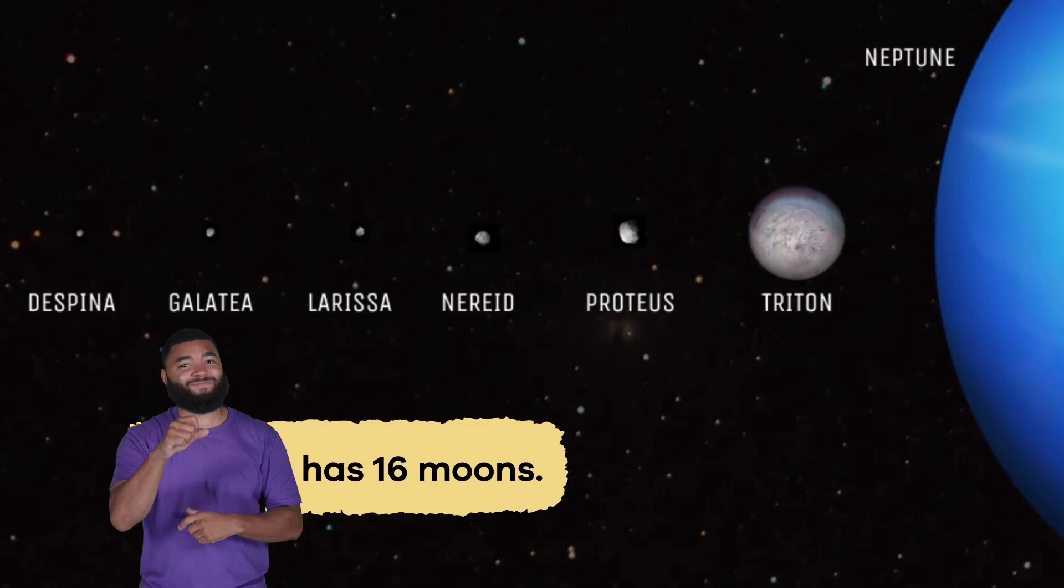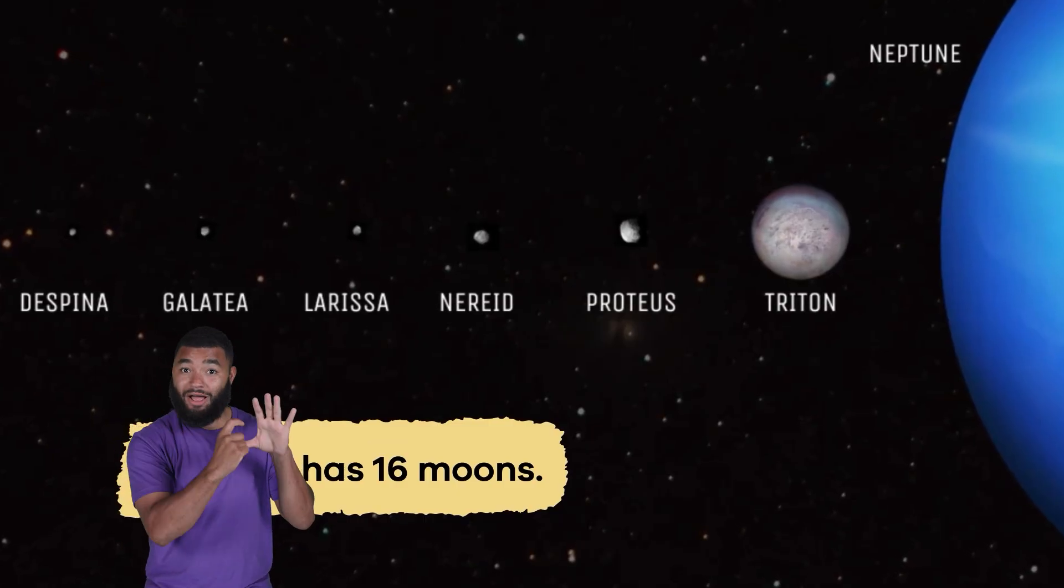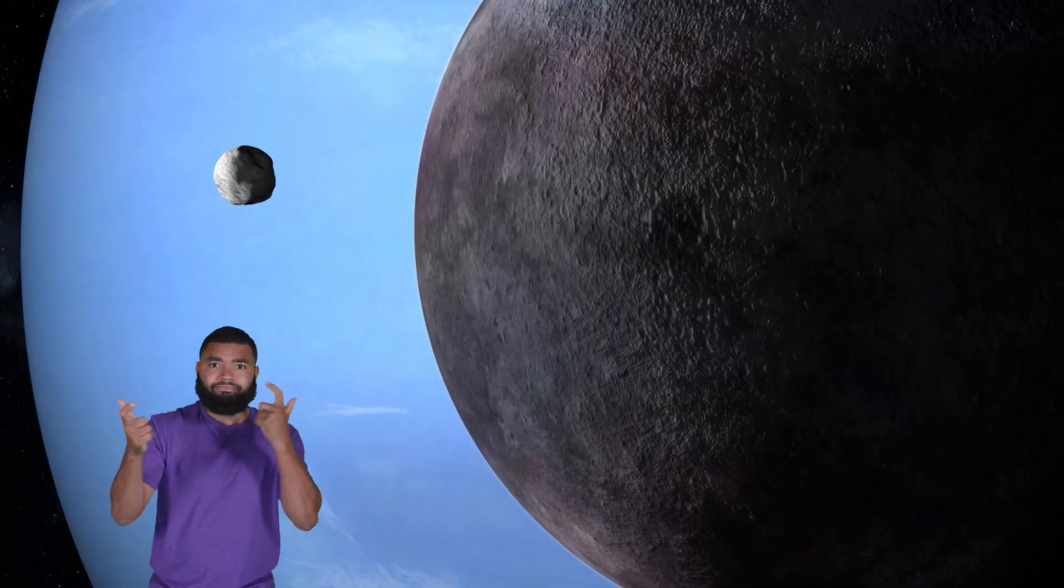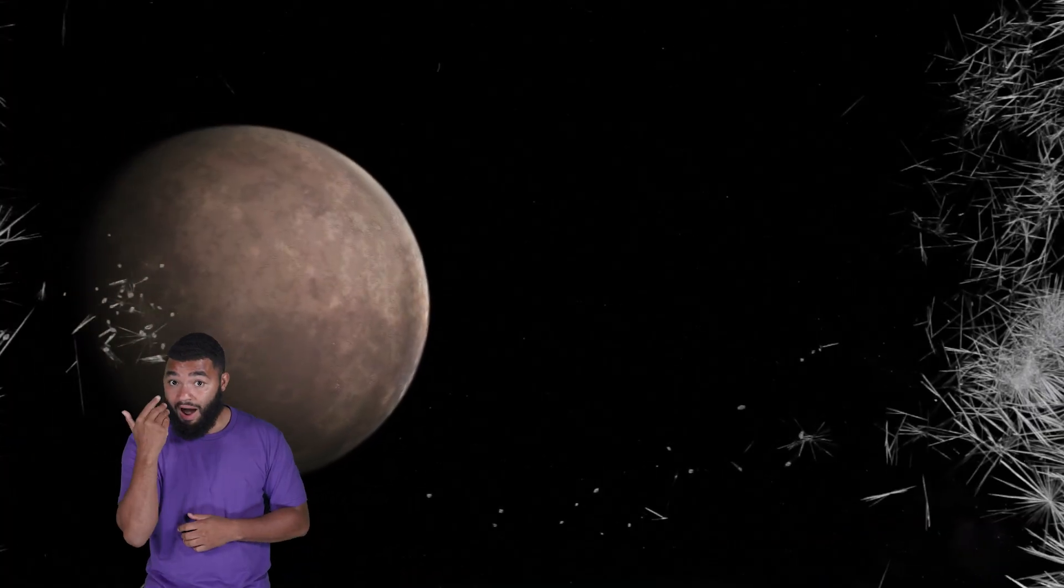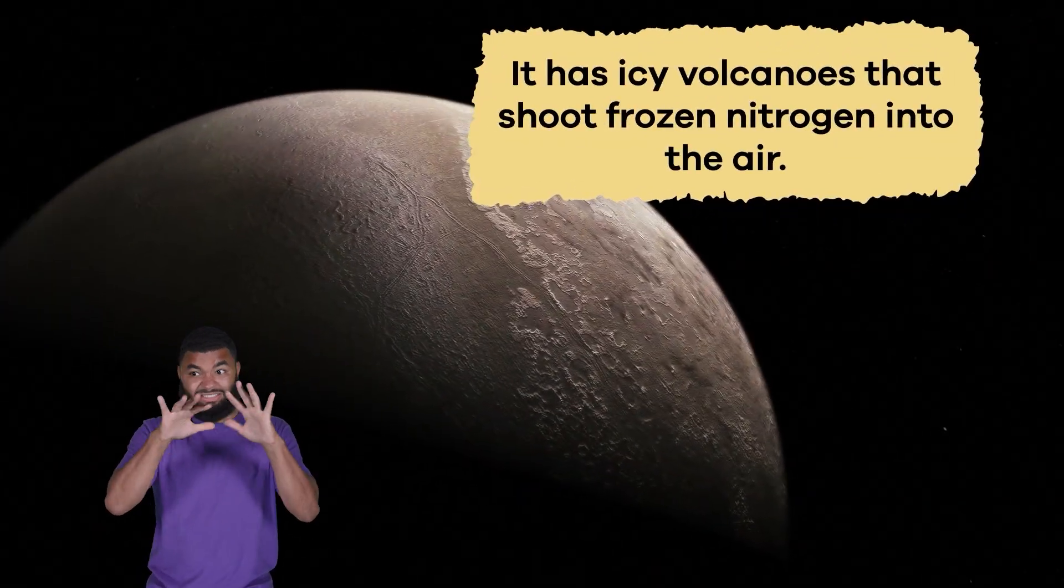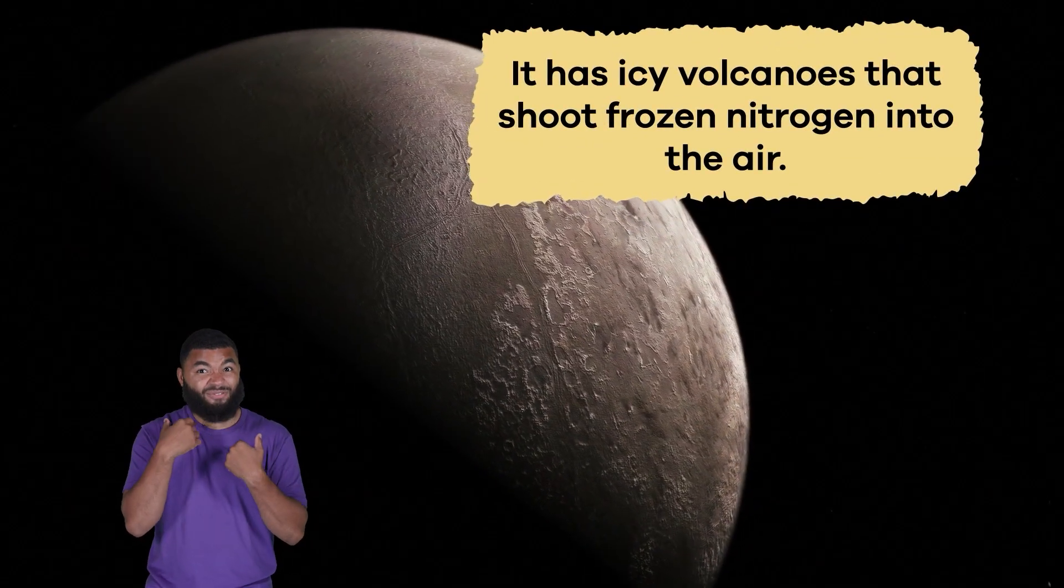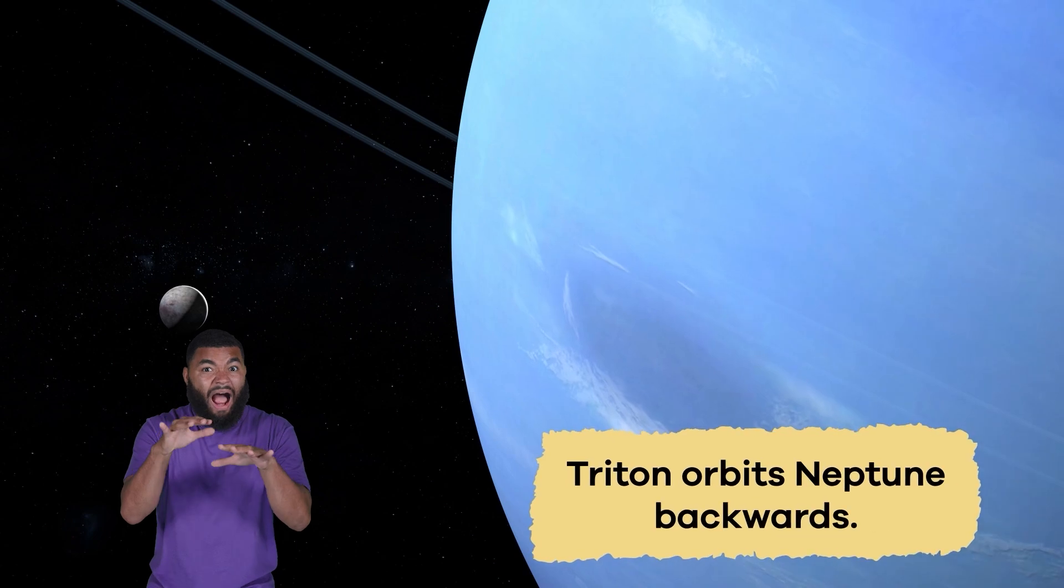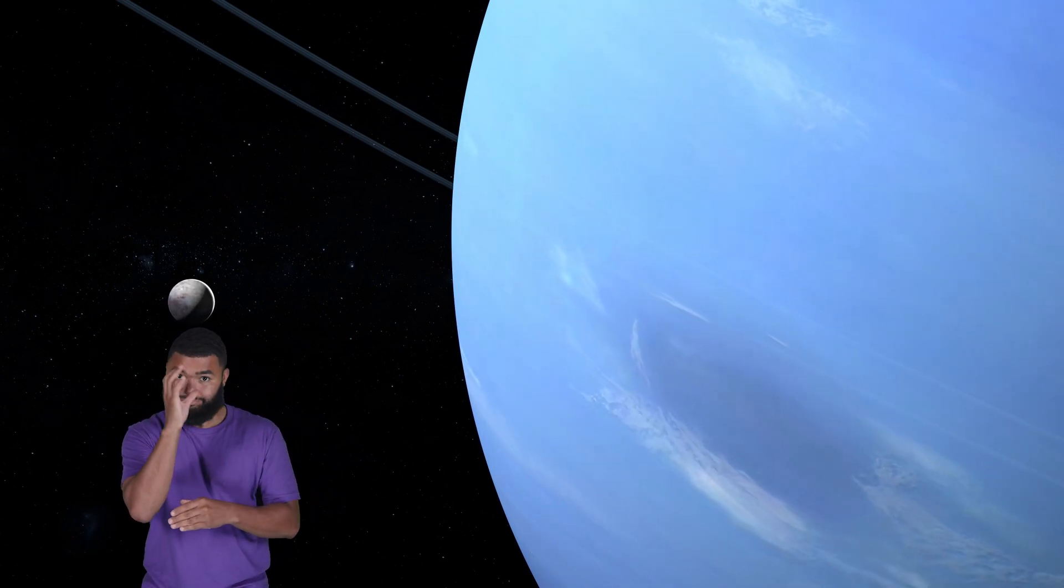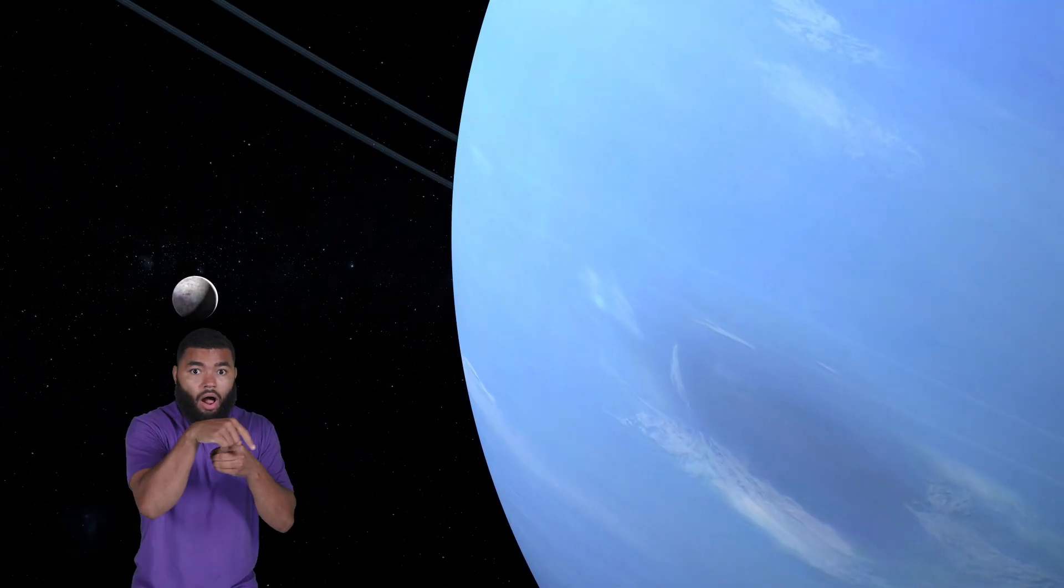Neptune has 16 moons, with names like Triton, Proteus, and Nereid. Triton is Neptune's largest moon, and it is intriguing for a few reasons. First, it is the coldest place in the entire solar system. It has icy volcanoes that shoot frozen nitrogen into the air. Triton also orbits Neptune backwards, which means it goes the opposite way most moons orbit their planets.